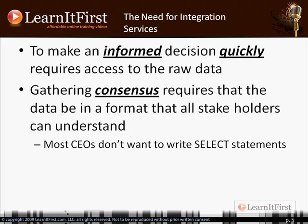To make an informed decision quickly means you need access to the raw data — whether it's demographic information, where your customers are coming from, or where your products are on the planet at any given moment. Gathering consensus means that data has to be in a format all stakeholders can understand. CEOs and CTOs don't want to write SELECT statements, and we're not going to ask someone in HR to write a complicated 12-table join in SQL Server.